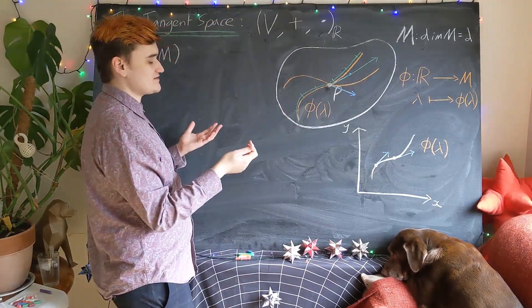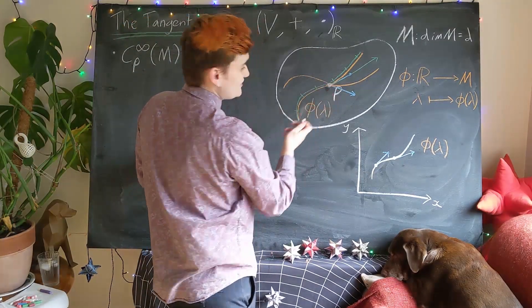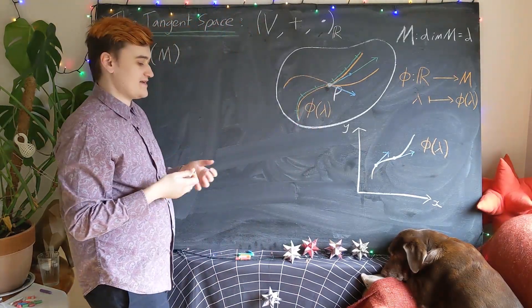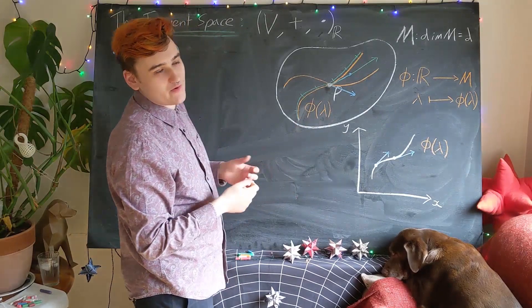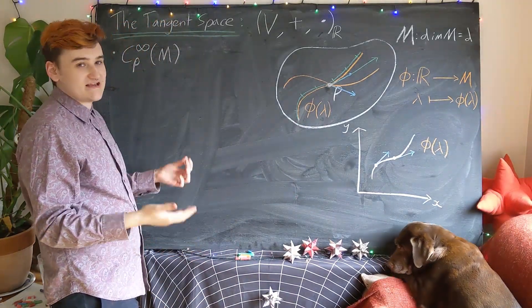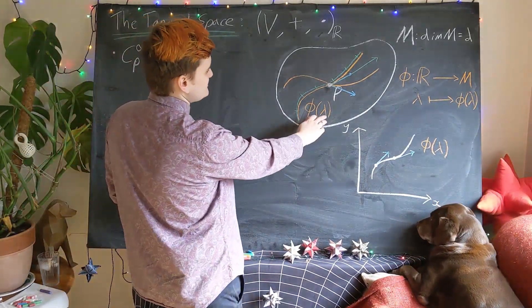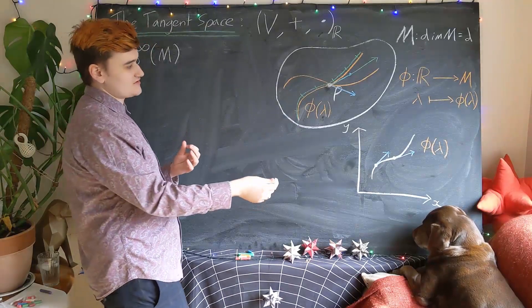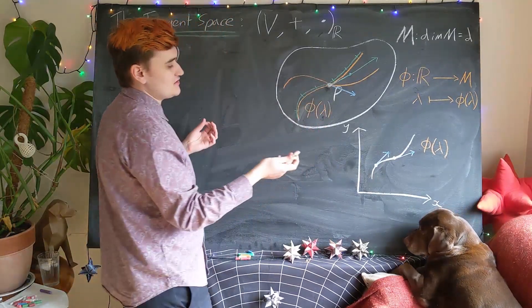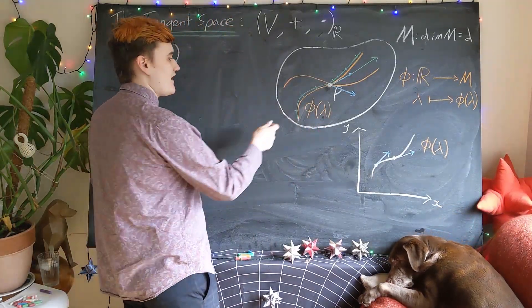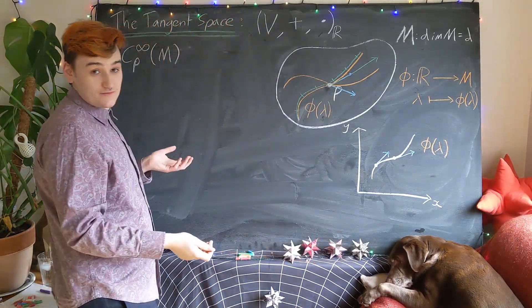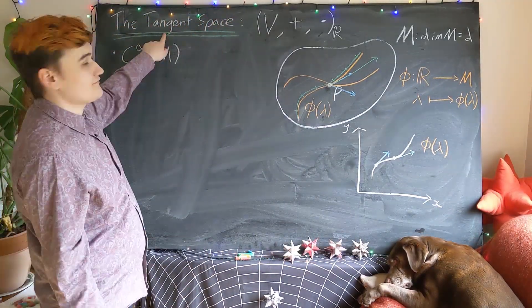We then consider all the possible curves that we could draw through that point, and those curves are going to be parametrized essentially by their speed through that point. And then if we take the derivative or the parameter derivative, that's going to produce essentially the tangent or the tangent vector to that curve, and the set of all those tangent vectors is the tangent space.